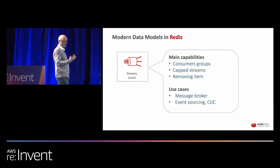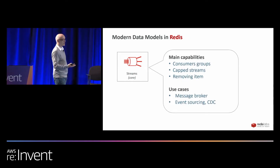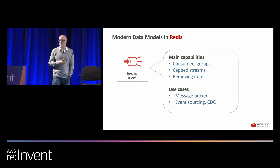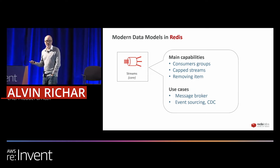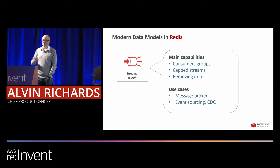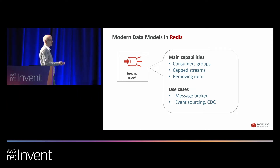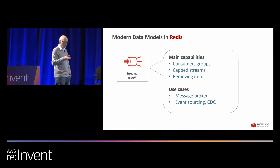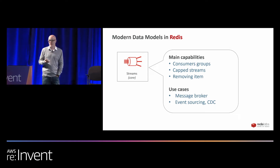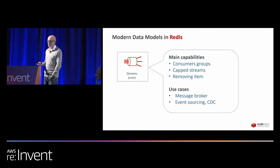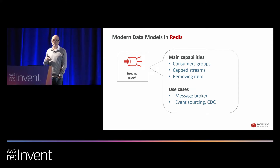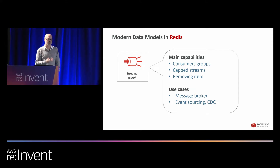Let's have a look at streams. I'm sure you've all been using RabbitMQ, MQSeries, or Kafka — there are a million different ways of consuming and creating streams of data. We added streams into the core Redis in Redis 5, and the goal was to have those characteristics that you liked about streaming, but also the performance of Redis.